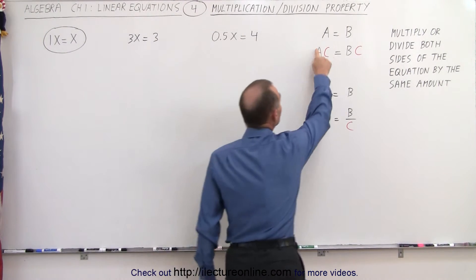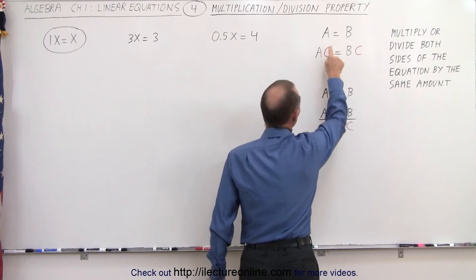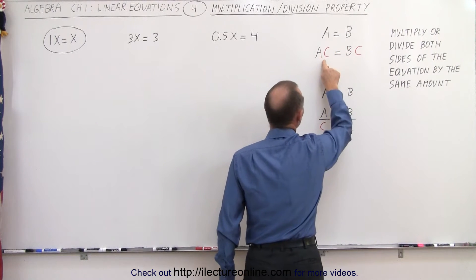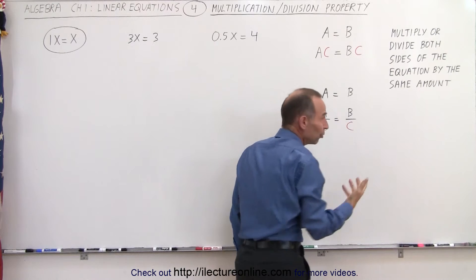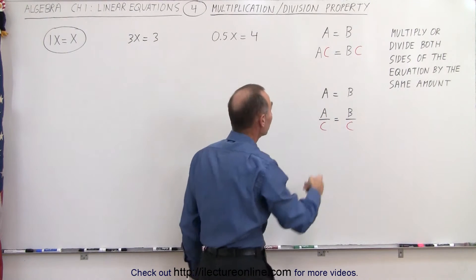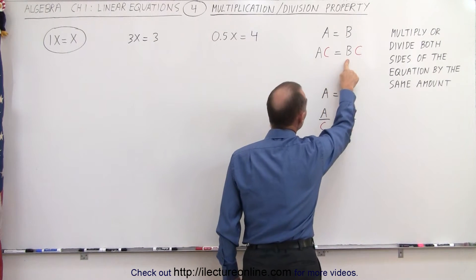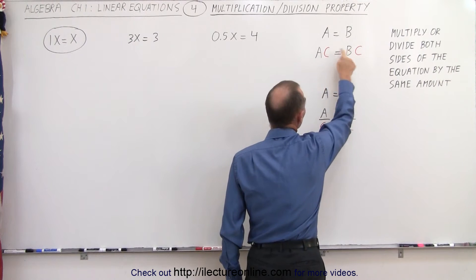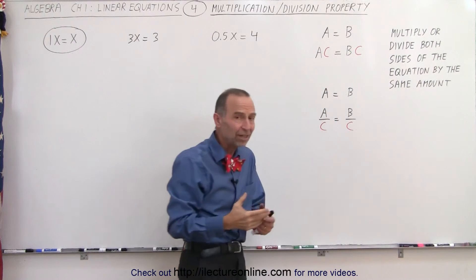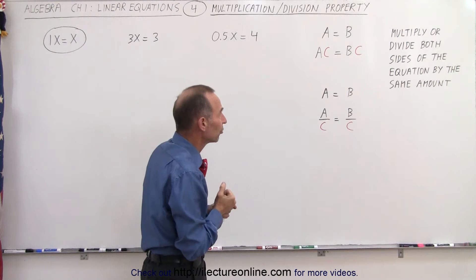Let's say we have an equation where A equals B. Notice that we can multiply both sides with the same number, C. Let's assume that C represents a number, so that A times C equals B times C. Notice we don't put any symbol in between the A and the C. It simply implies that those are multiplications.